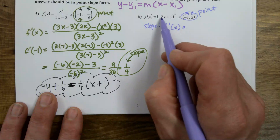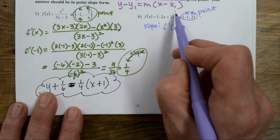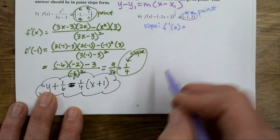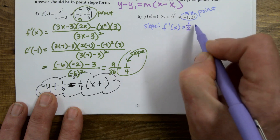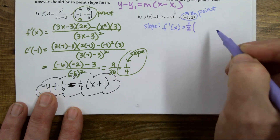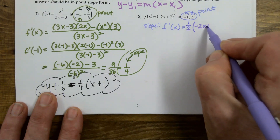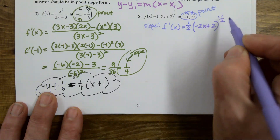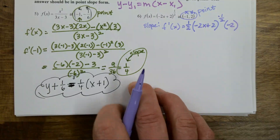To do the chain rule: multiply the power in front, leave the inner as is, lower the power by one, then multiply by the derivative of the inside.